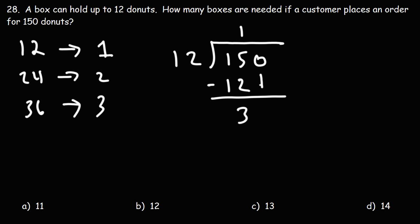Next we need to bring down a zero. How many times does 12 go into 30? The highest multiple of 12 just under 30 is 24, so 12 goes into 30 two times. 12 times 2 is 24.